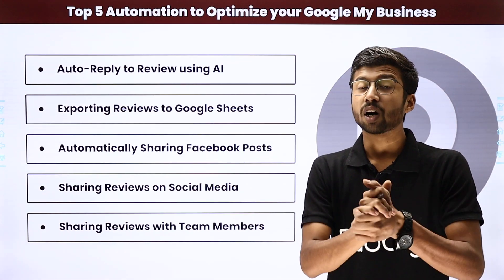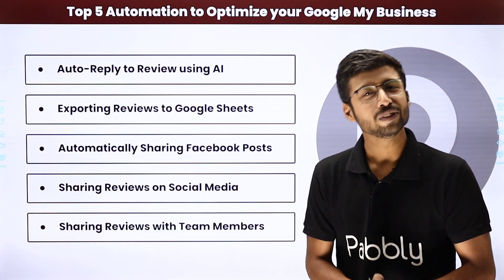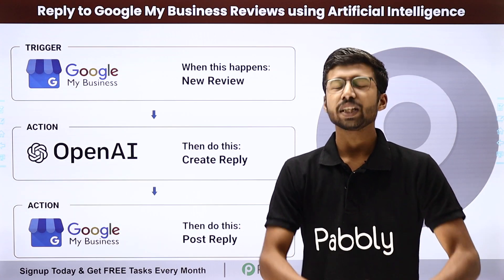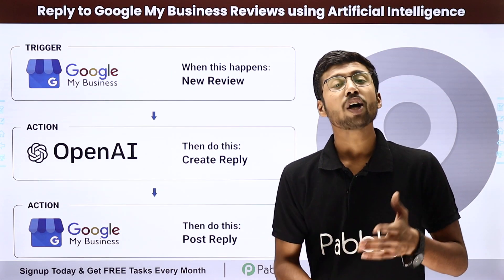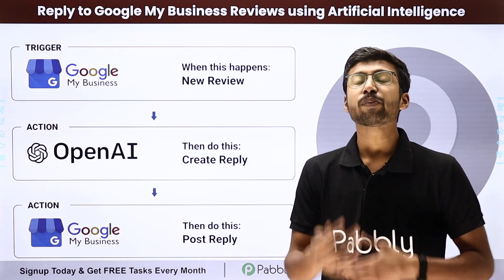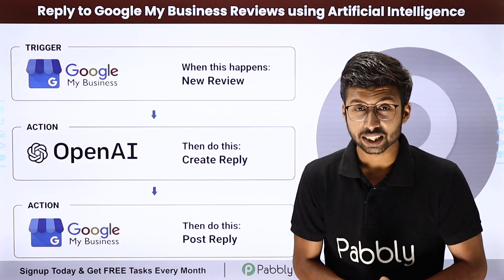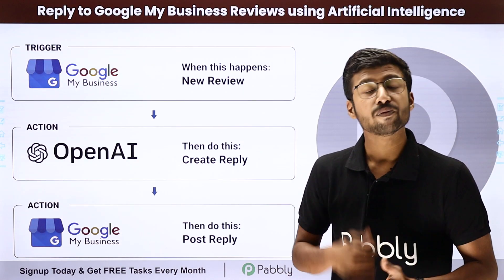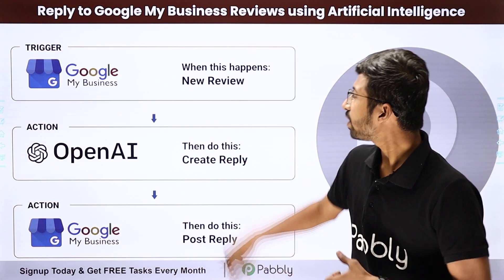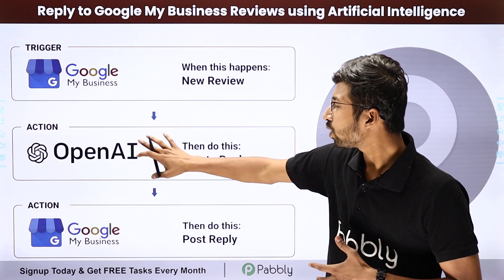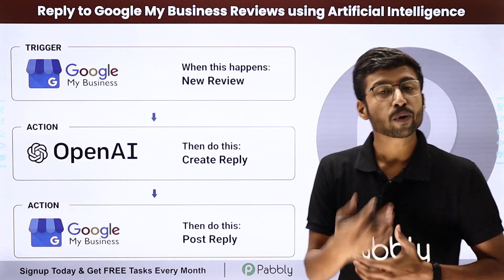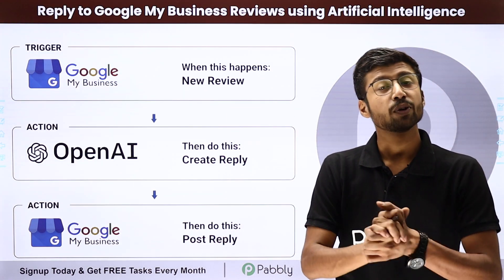Let's have a detailed look at how these automation use cases actually work. Our first automation idea is auto-replying to Google Map Business reviews using artificial intelligence. On a regular basis we keep getting reviews from customers, and replying to those reviews daily can be a very hectic task. Using this automation, we will use an AI platform like OpenAI to generate replies — whenever we get a new review, OpenAI will create a reply for that particular review.